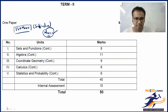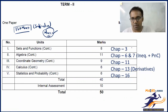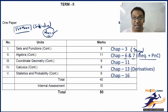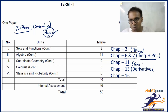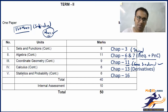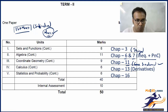In Term 2, the remaining Sets and Functions topics carry over. Looking at the chapters: Chapter 3 is Trigonometry, which comes in Term 2 - the full Trigonometry is retained here. Chapter 6 is Inequalities, Chapter 7 is Permutation and Combination - this part of Algebra comes in Term 2. Chapter 11 is Conic Sections, which includes Circle, Parabola, Ellipse, and Hyperbola - this Coordinate Geometry portion comes in Term 2.